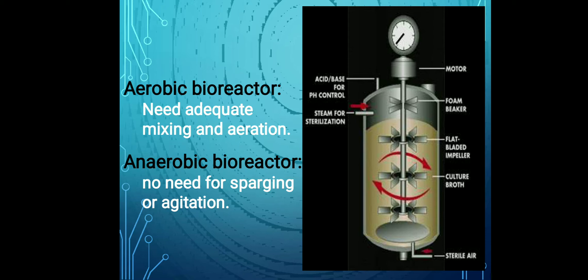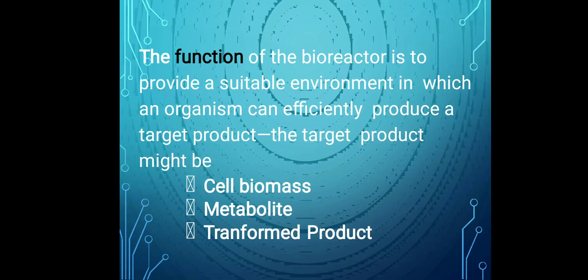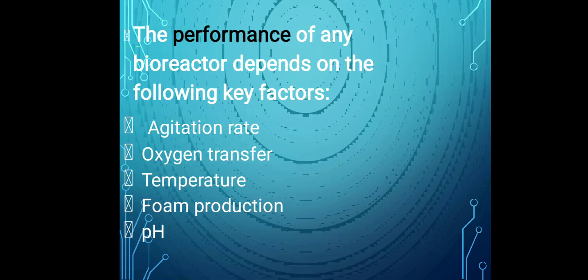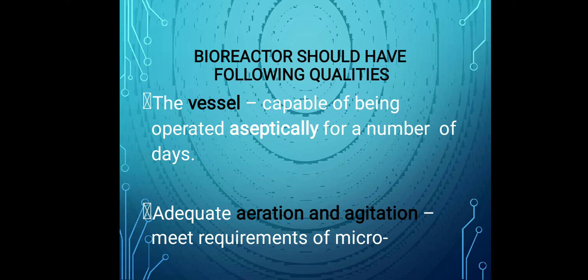The bioreactor contains culture broths, flat-plated impellers, and components for acid-base pH control, steam, and sterilization. The function of the bioreactor is to provide a suitable environment in which organisms can sufficiently and efficiently produce a target product — that target product might be cell biomass, metabolites, or transformed products. Performance depends on key factors like agitation rate, oxygen transfer, temperature, foam production, and pH.